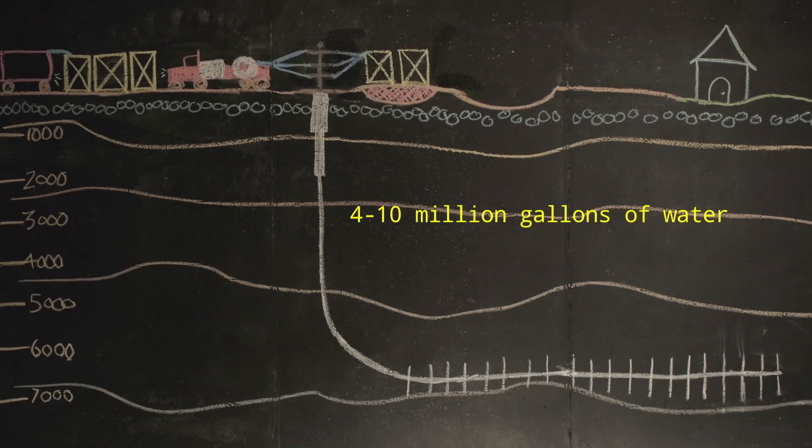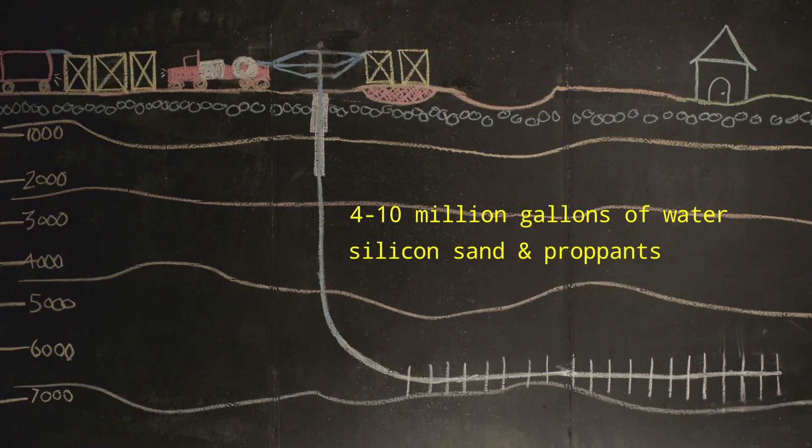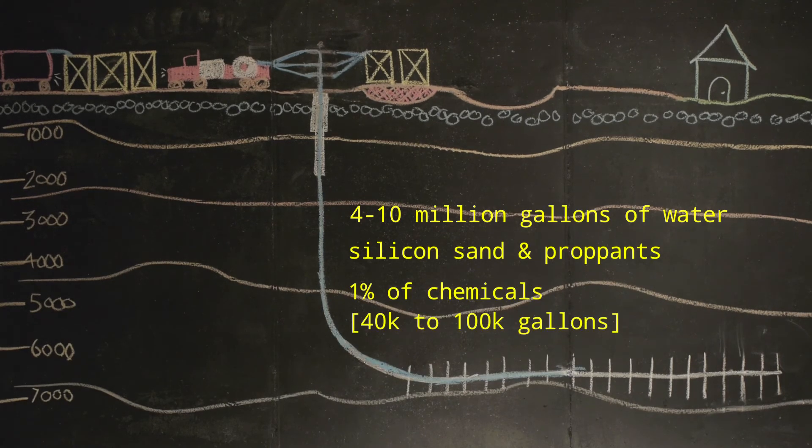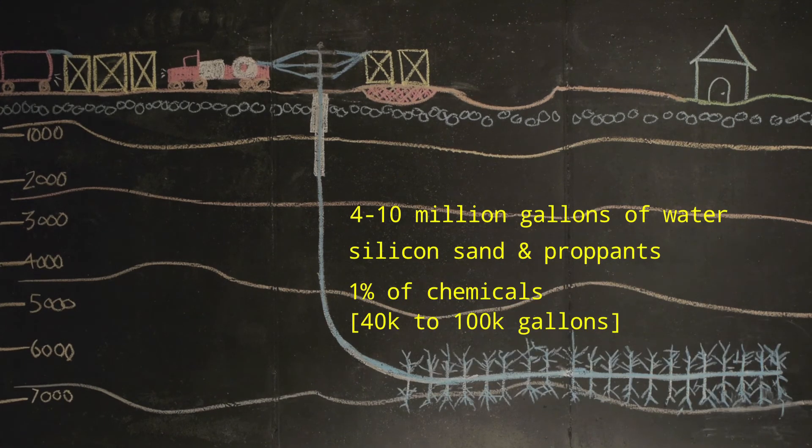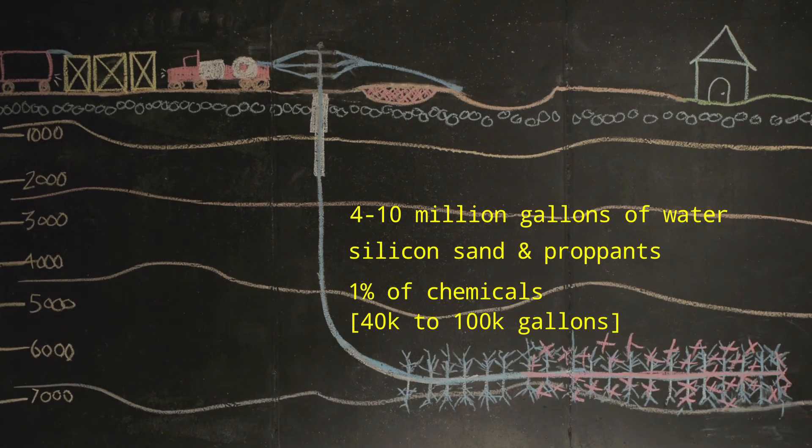Fracking involves blasting millions of gallons of water, sand, gel and other chemicals into the well at very high pressure. This fractures and props open the rocks so the trapped gas can flow into the well and up to the surface.